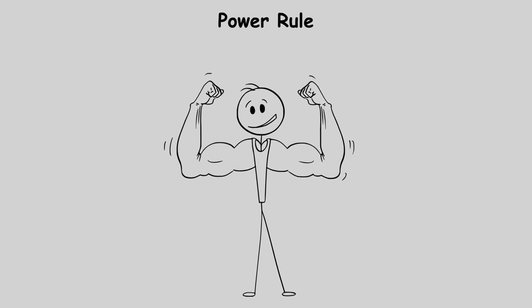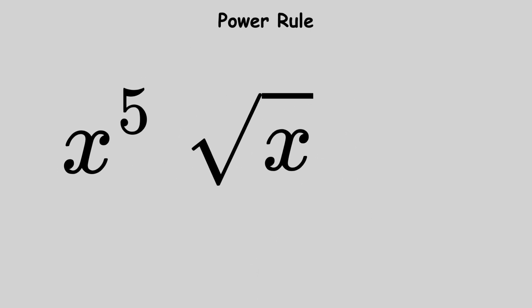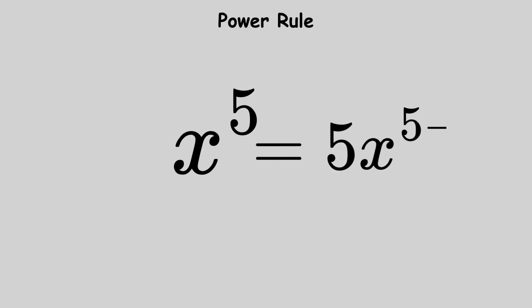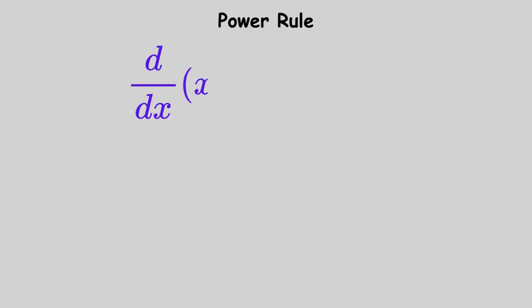The power rule is used when x is raised to any power, whether it's a positive integer, negative integer, or fraction. To apply it, bring the exponent down as a multiplier, then subtract 1 from the original exponent. The formula is: the derivative with respect to x of x to the power n equals n times x to the power of n minus 1.